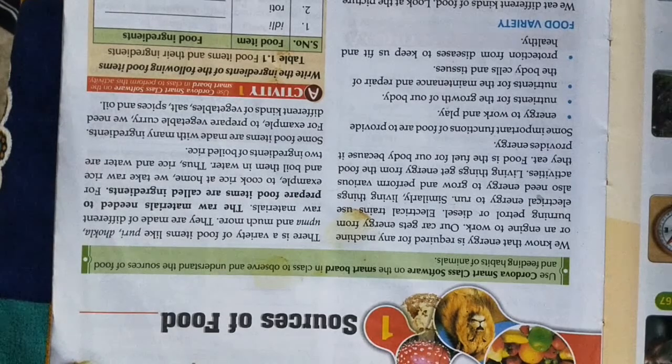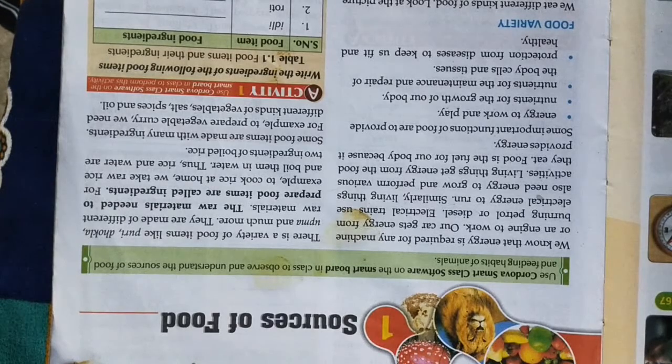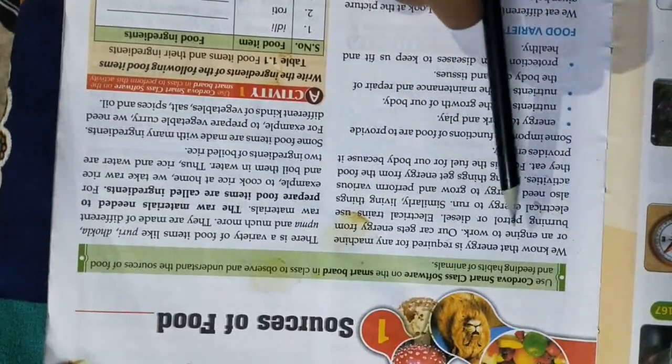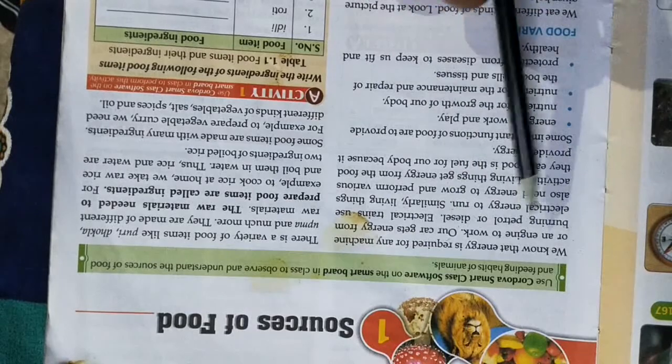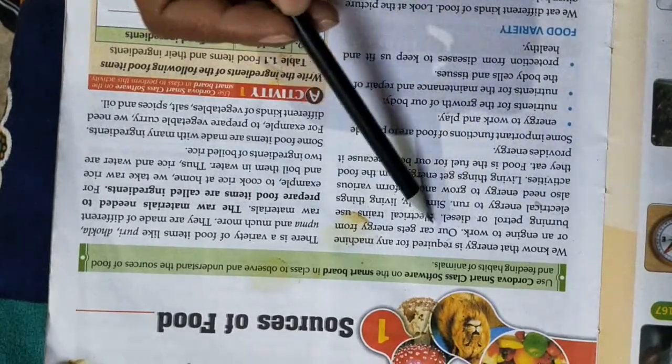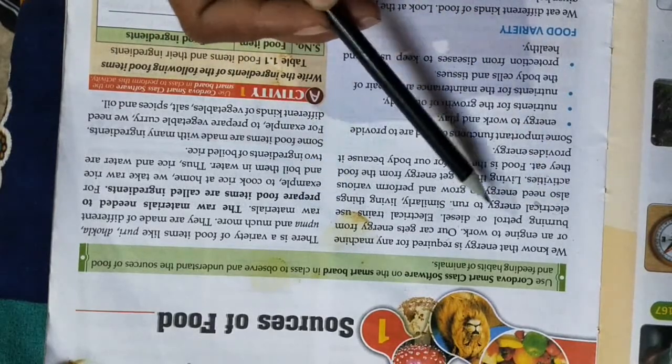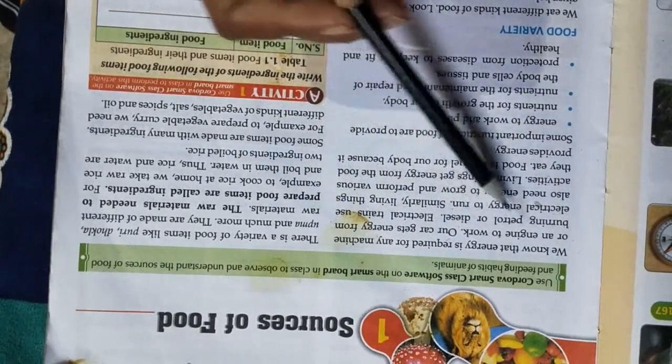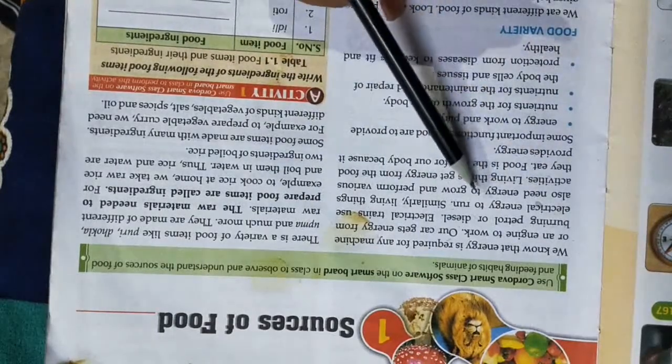In this chapter, we learn how we get food from plants and from animals, and what are the functions of food. So let's start our topic. We know that energy is required for any machine or engine to work. Our car gets energy from burning petrol and diesel. Electrical trains use electrical energy to run.